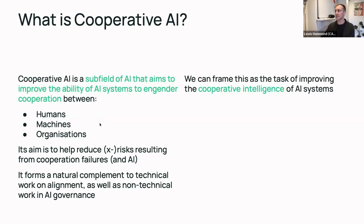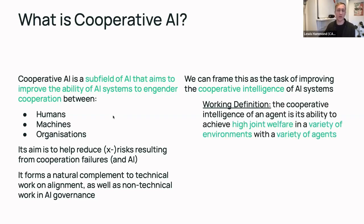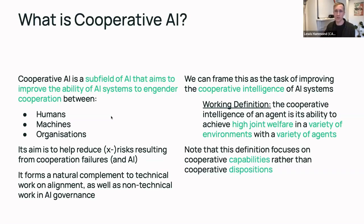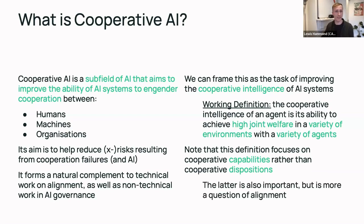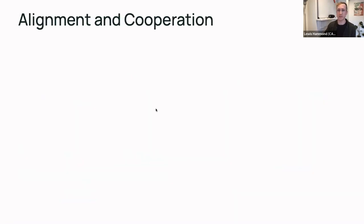Another way to frame this is as the task of improving the cooperative intelligence of AI systems. One working definition — borrowing liberally from the Legg-Hutter definition of universal intelligence — is: the cooperative intelligence of an agent is its ability to achieve high joint welfare in a variety of environments with a variety of other agents. Importantly, this definition focuses on an agent's abilities rather than its dispositions. It's all very well meaning to cooperate if you're actually terrible at doing so — and the latter question of dispositions falls more under the standard bracket of alignment.